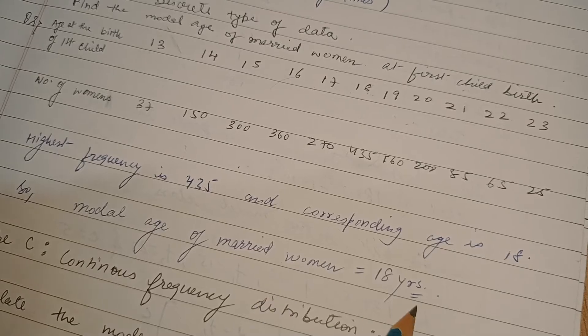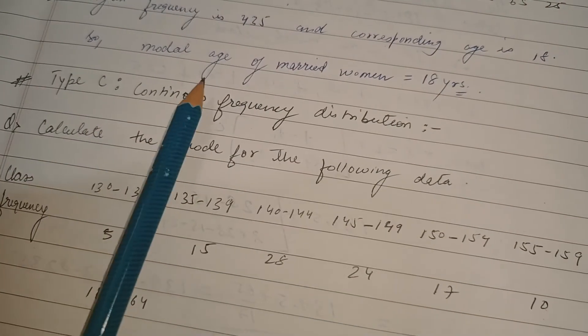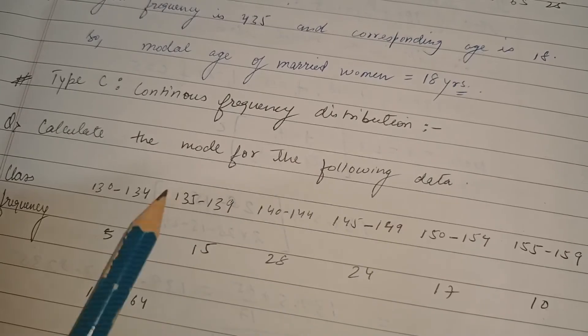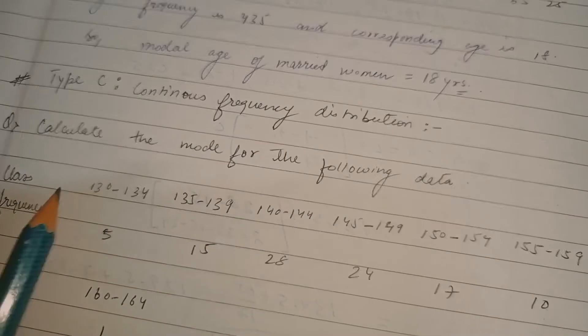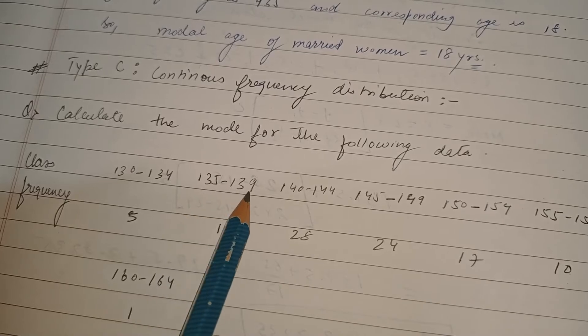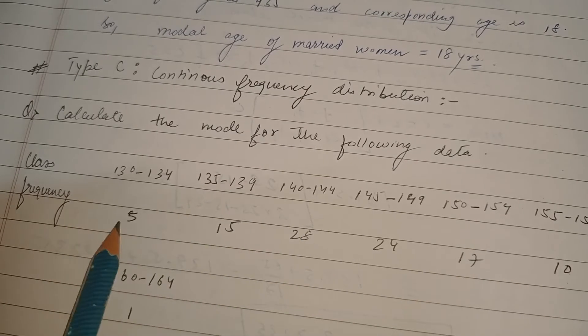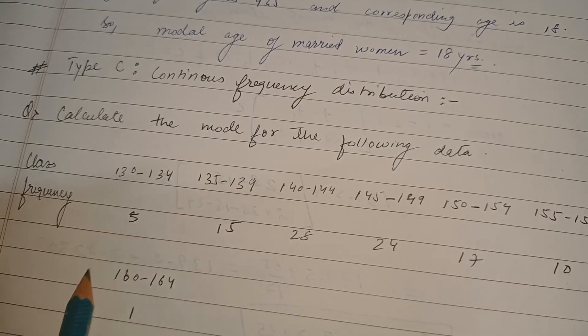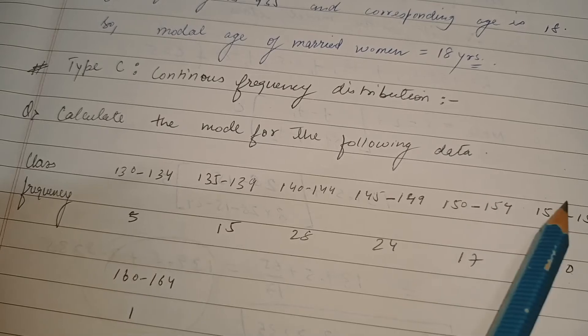Now to the most important question: continuous frequency distribution type of problem. Calculate the mode of the following data. Class is given 130 to 134, 135 to 139, and so on, and the frequencies are given.